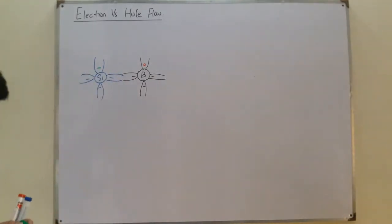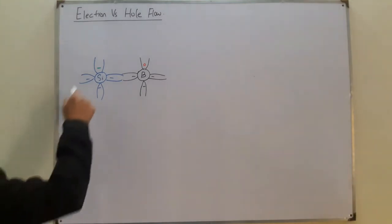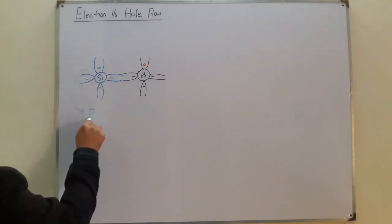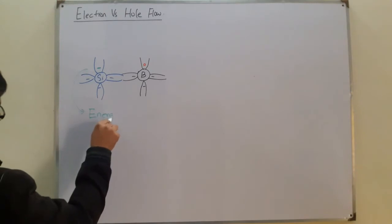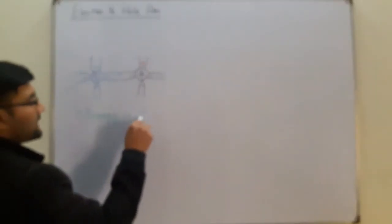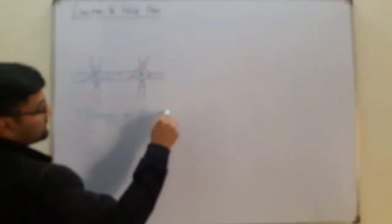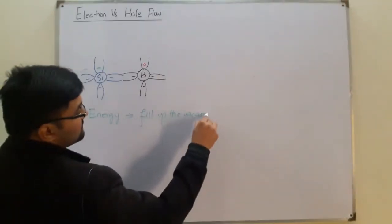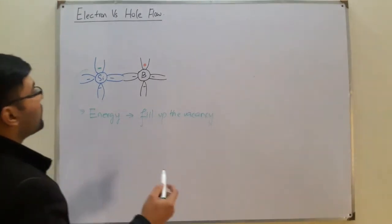Now what do you have? If this electron is given sufficient energy, it will move into the vacancy. So it will fill up the vacancy, which means it will go to the side of the hole.